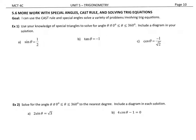In this lesson we're working further with our special angles, the cast rule, and solving our trig equations. Our goal today is that we want to use the cast rule and special angles to solve a variety of problems involving trig equations. Our first example here is asking us to use our knowledge of special triangles to solve for angle theta if the angle theta is between 0 and 360 degrees. Include a diagram in our solution.